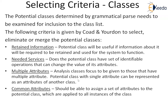Then we must go for multiple attributes. Any class with multiple attributes is our focus. If a potential class has only one or two attributes, it can be represented as an attribute of some other class, and maybe we can merge it. Multiple attributes are one criterion for moving a class from the potential list to the selected list. Then common attributes — we should be able to assign a set of attributes to the potential class that are applied to all instances, making them more stable and worthy of consideration.